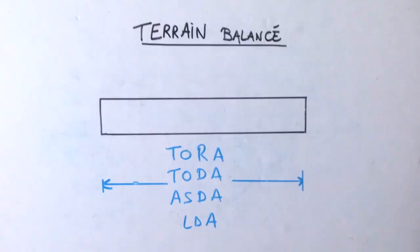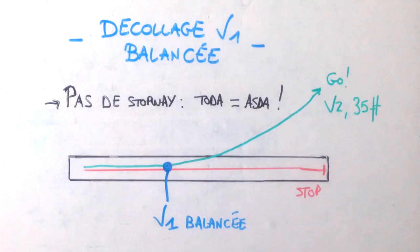So in case of terrain balanced, what we call the terrain balanced, it's not clearway nor stopway. So we have just the runway like that, brute. We will have the TORA, the TODA, the ASDA, and the landing distance available which will be the same. And in this case, only in this case, we will choose one single V1.